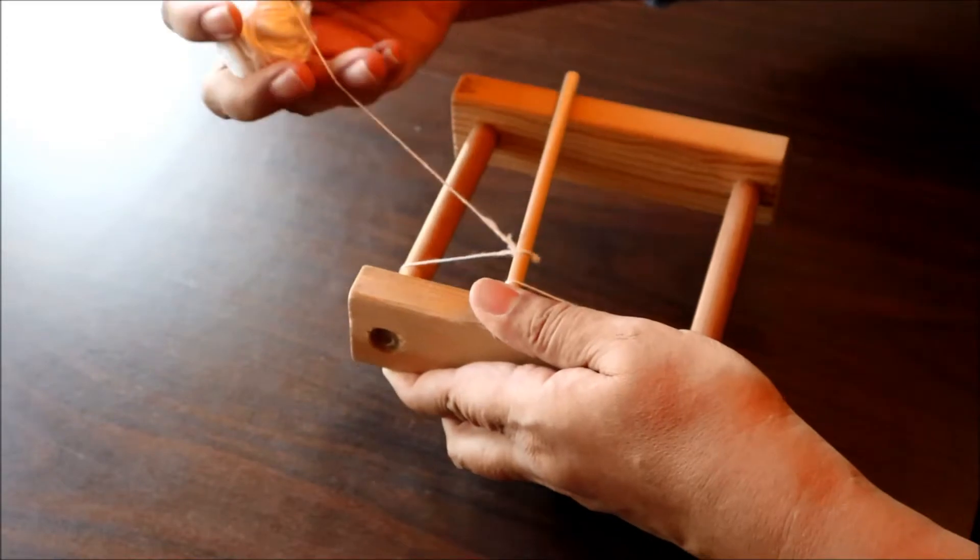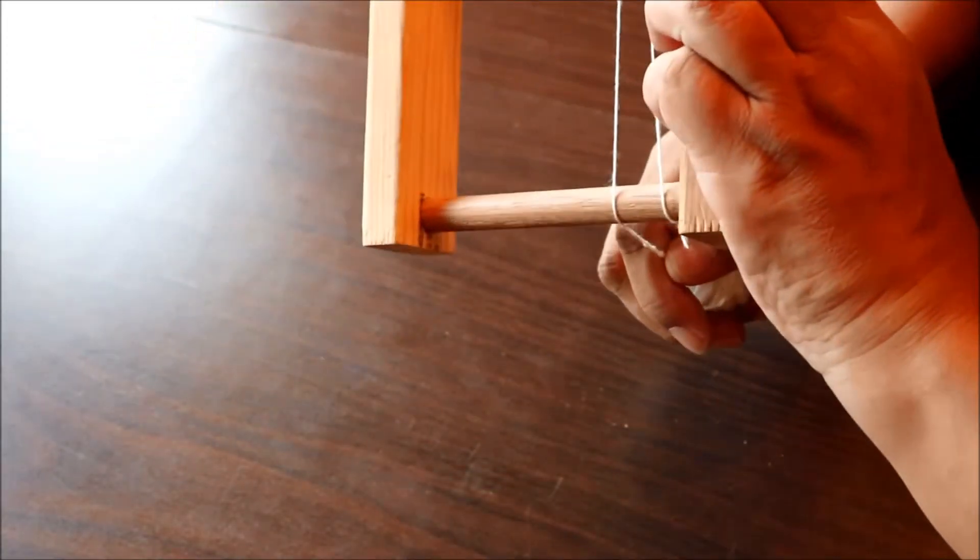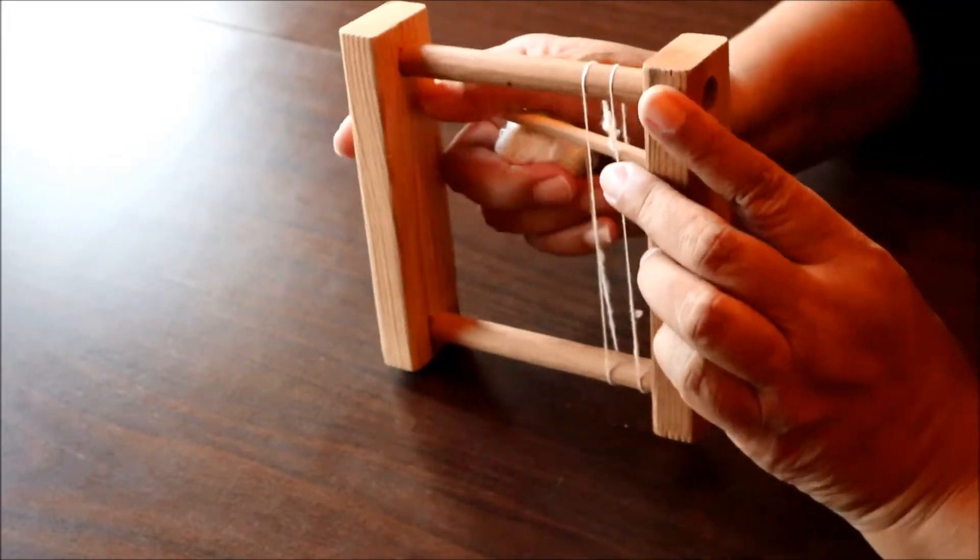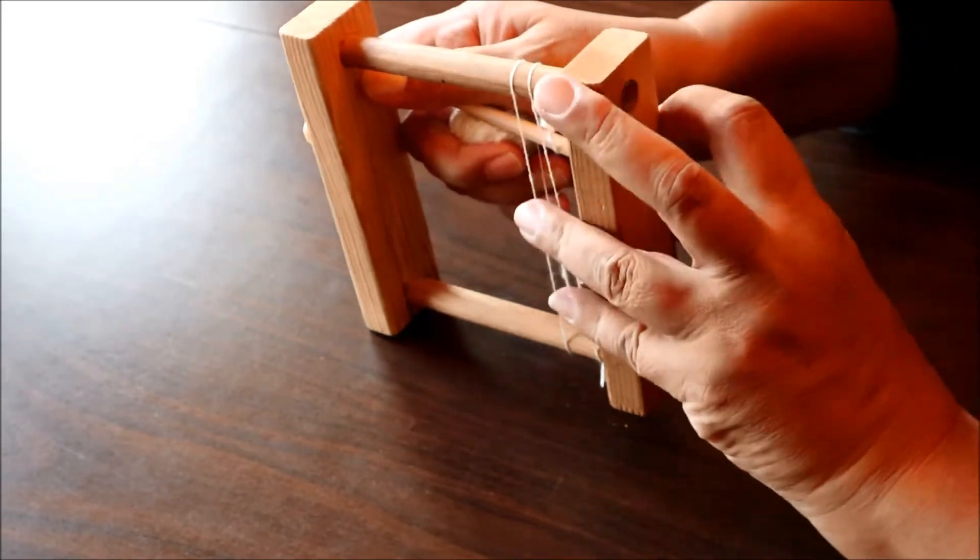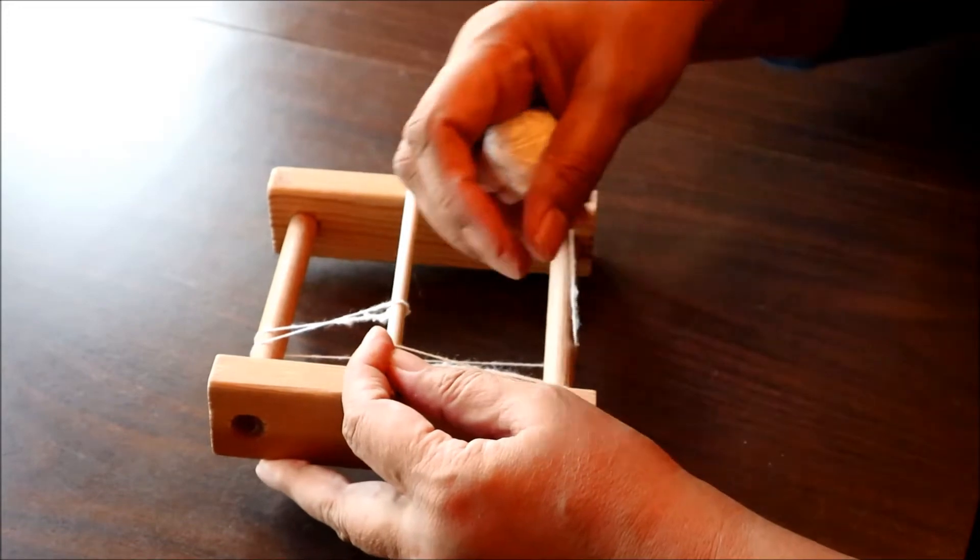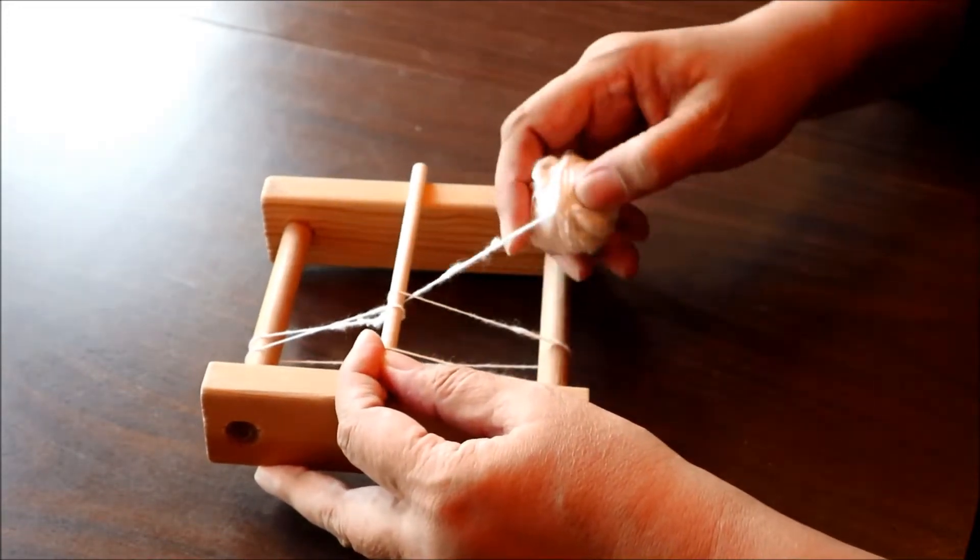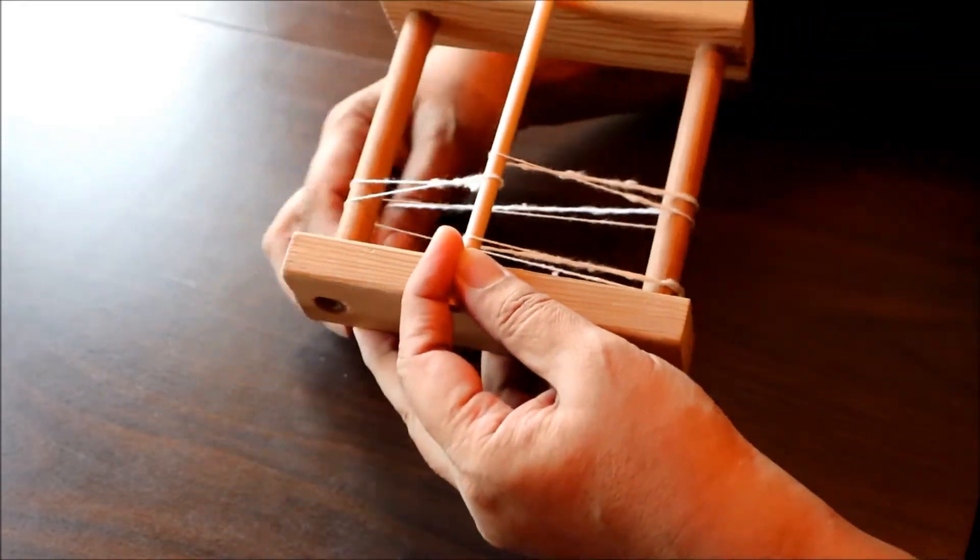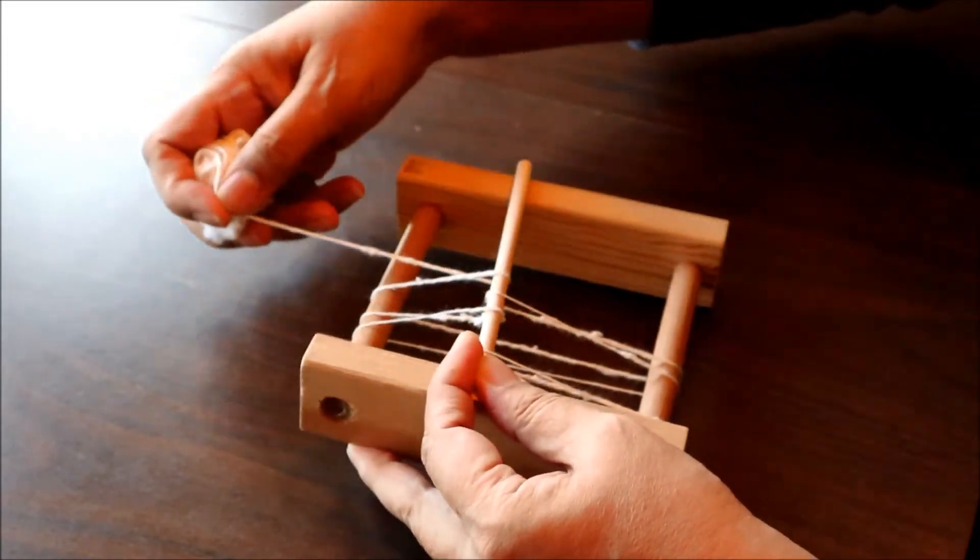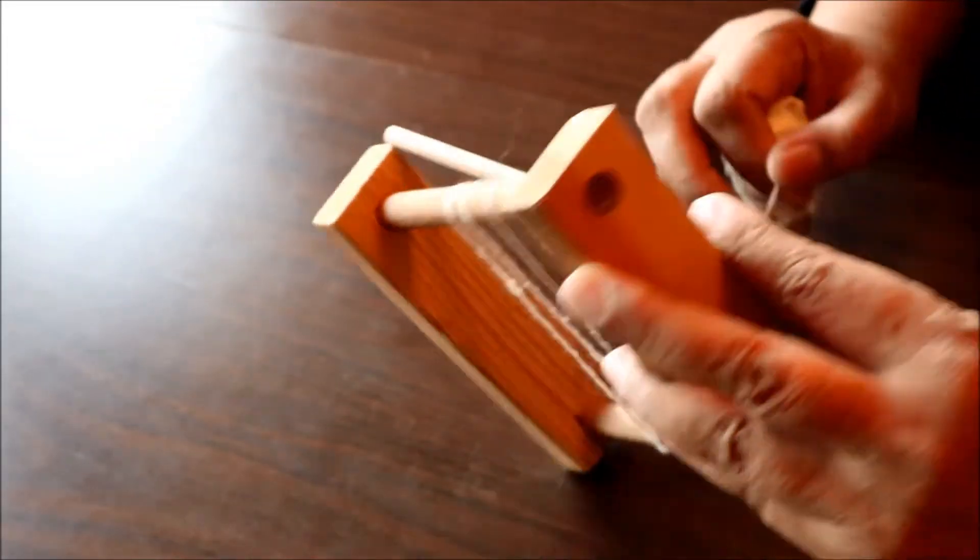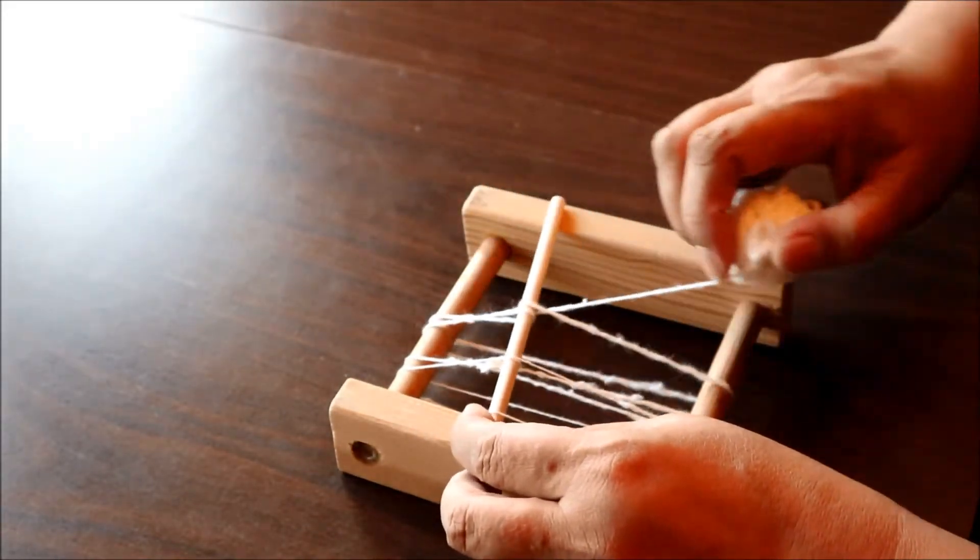The way that the warping goes is I loop the warp thread over the bar and then I wrap it around to the front of the loom. So at the front of the loom, the threads are just going straight up and down, and all of the action happens here at the back where the bar is. So every time I come to the back, I loop the warp thread around that bar and then back around to the front and then straight up and down the front. And then I loop it around to the back again, around the bar and then back to the front, straight up and down in the front.